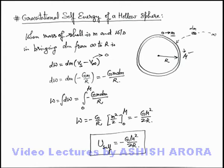Now, if we supply GM²/2R amount of energy to this shell, its total energy will be zero, which implies all its particles will disassemble and reach infinity. So we can directly state that GM²/2R is the amount of energy required to disassemble a hollow spherical shell — dispersing its mass from a surface of radius R to infinity.